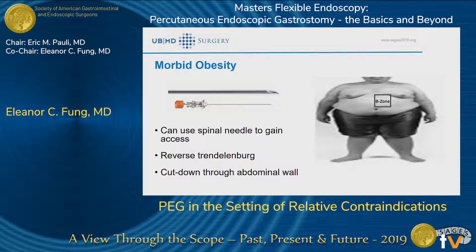In morbidly obese patients, the challenge is that there is so much fat between the skin and the stomach that you cannot achieve all three elements of the safe tract technique — transillumination and one-to-one palpation. The B-zone described in the literature refers to the area with less pannus and less fat to traverse. In these scenarios, you can use a spinal needle, which is longer than the introducer needle, to gain access into the stomach endoscopically. Placing patients in full reverse Trendelenburg helps bring the stomach down to facilitate PEG placement.